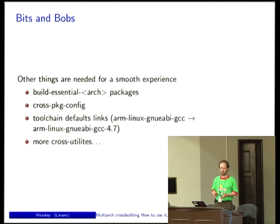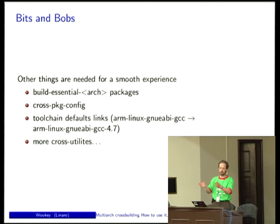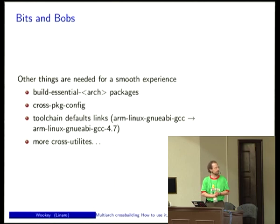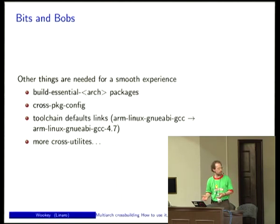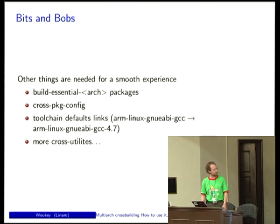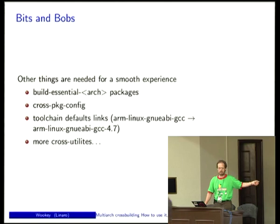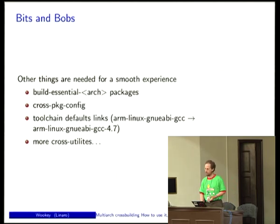Cross pkg-config is another issue. pkg-config is perfectly capable of doing cross stuff, but you have to call it as TRIPLET-pkg-config so it knows which paths to use — otherwise it'll look up your build libraries instead of your host libraries. There's a wrapper in the pkg-config package, but the question is which package provides all the per-architecture symlinks. There will be one package per architecture containing a symlink, which feels inelegant, but no better approach has been thought of.